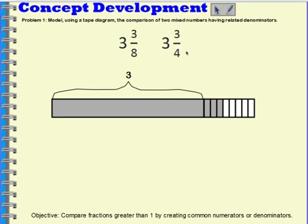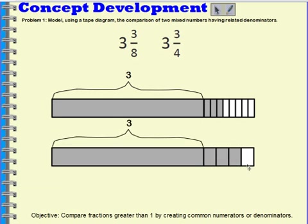Now I'm going to get one that is 3 and 3 fourths. It's the same size as the other one because it's showing 3 wholes and it's showing another whole that's broken into 4 parts and 3 of those parts are shaded. That represents 3 fourths.